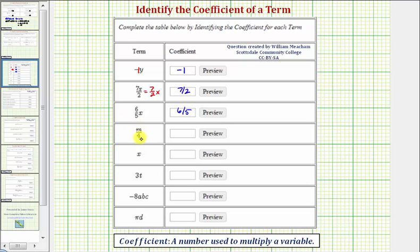Next we have m divided by four. Looking at just the numerator, we can think of m as one m, and one m divided by four is equivalent to one-fourth m, or one-fourth times m, and therefore the coefficient is one-fourth.